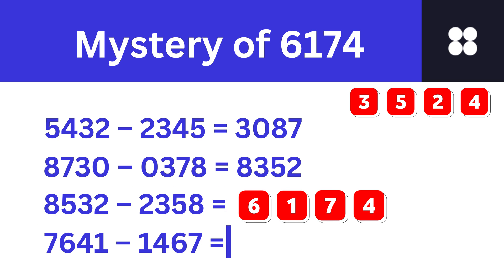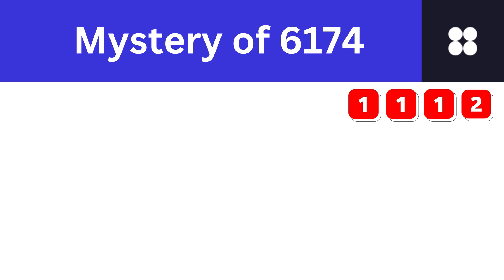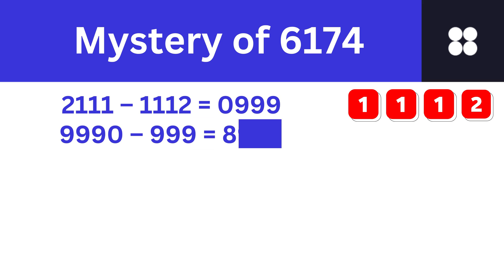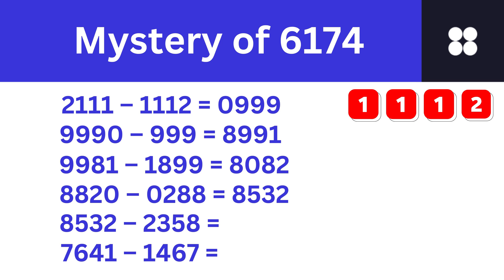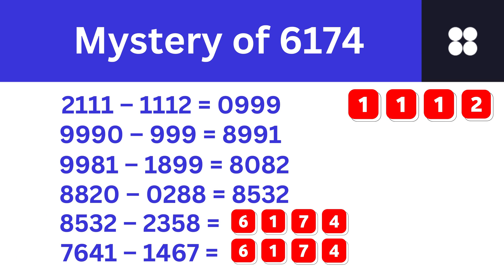Arrange 8352 in ascending and descending orders, subtract the smaller number from the bigger number — you will get 6174. Do the same thing for 6174 and you will again get 6174. Now, will this operation work if I choose three repeating digits? Let me choose a number like 1112. Arrange 1112 in descending and ascending orders and subtract — we get 0999. I need to add a leading zero, then arrange and subtract again to get 8991. Continuing the iterations, we finally get 6174.